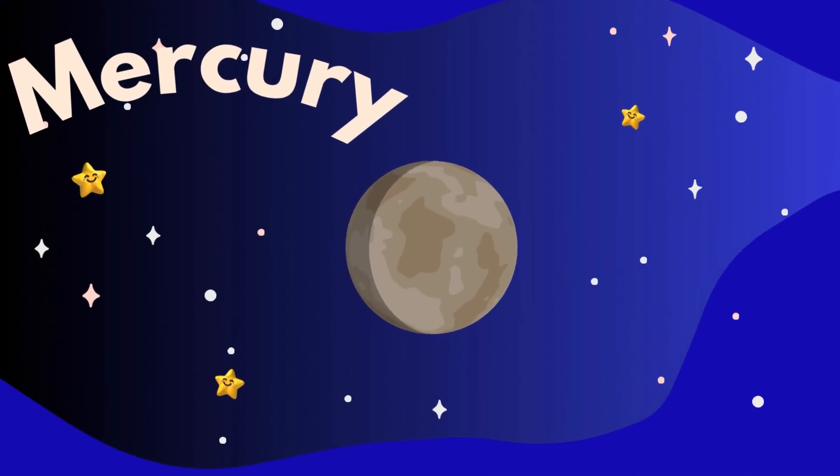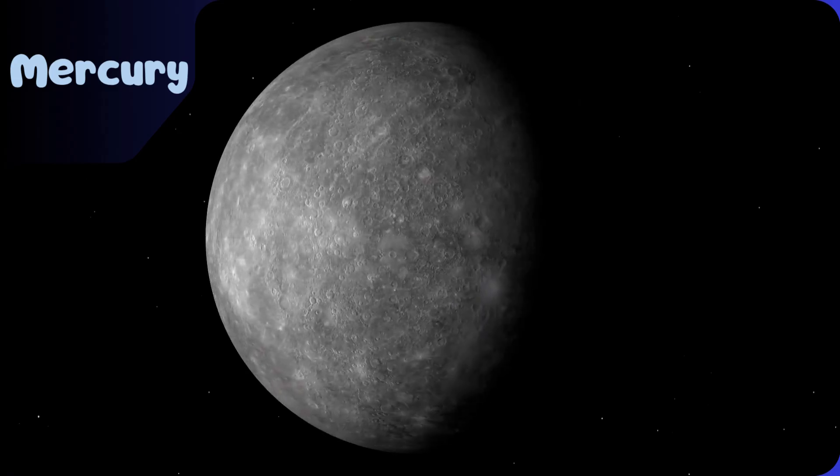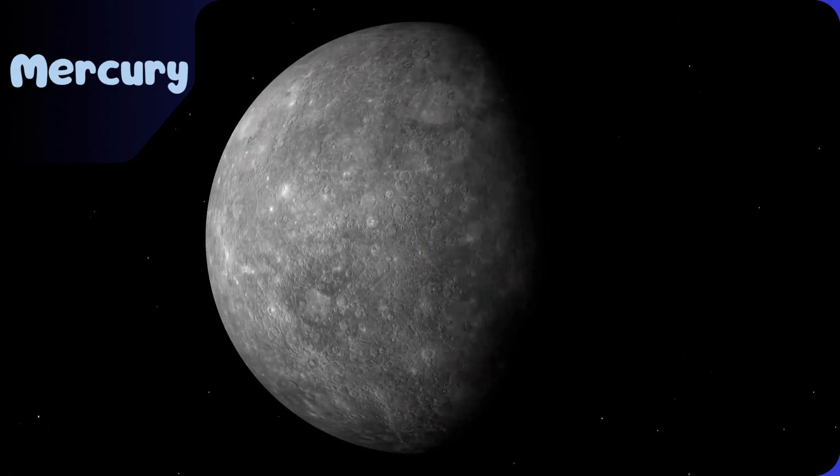Mercury. Mercury is the fastest planet zooming around the sun.